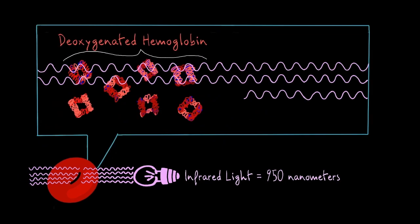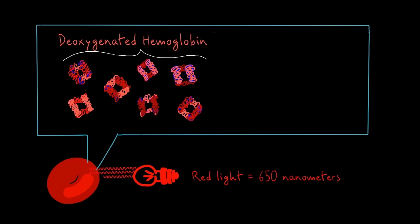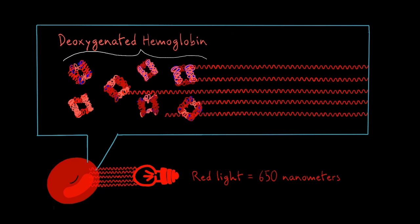On the other hand, deoxygenated hemoglobin takes in more red light than infrared light. The infrared light passes through the deoxygenated hemoglobin, unlike the red light, which is absorbed.